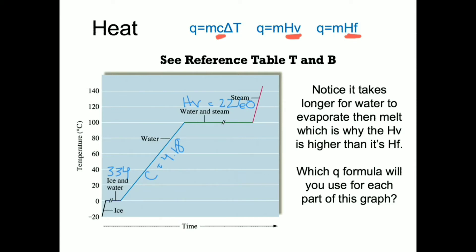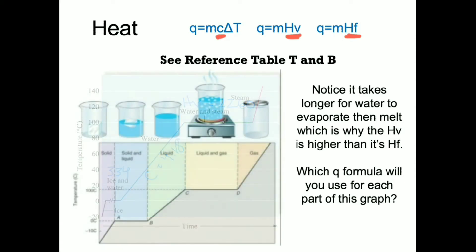When the temperature is not changing, at the plateaus, where we have phase changes, we're going to use the heat of fusion, 334 joules per gram, or the heat of vaporization, 2,260 joules per gram.